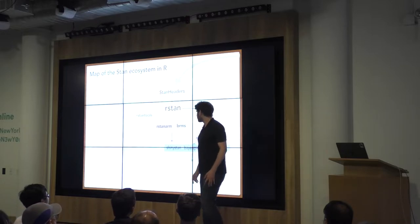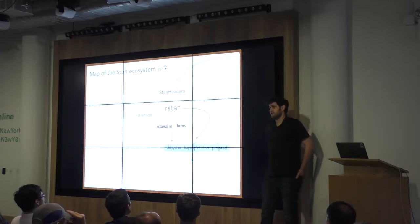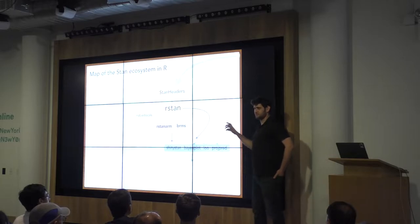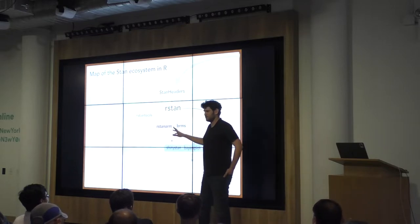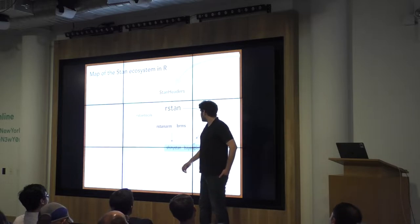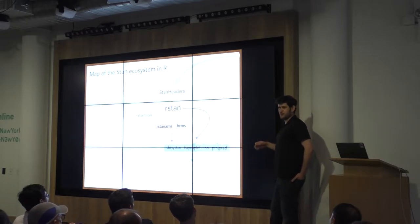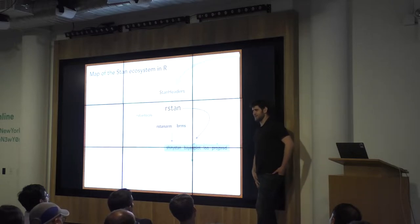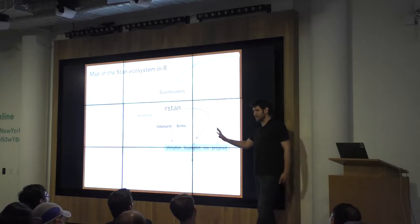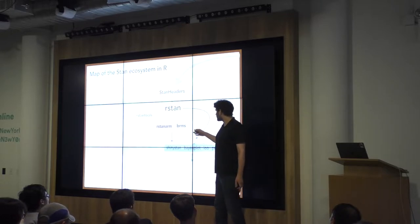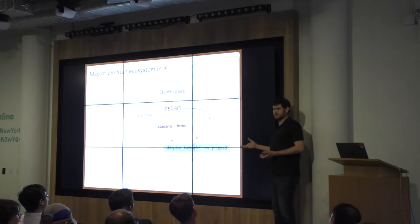RStanArm and BRMS are two R packages that have Stan programs that, in RStanArm's case, are already written and pre-compiled, and in BRMS's case, get written for you as you interact with the package. The main difference is that RStanArm doesn't require you to deal with C++ compilers at all — models come out of the box pre-compiled. A lot of the headache for new users is dealing with C++ toolchains, so RStanArm gets around that entirely. BRMS writes models on the fly, which lets it fit a wider range of models, but you have to deal with the C++ toolchain.